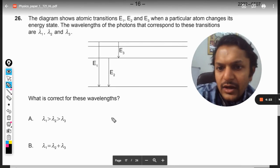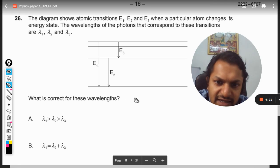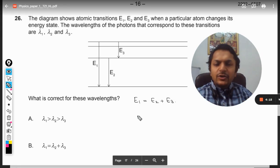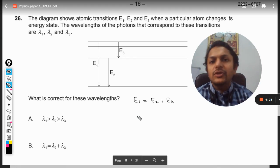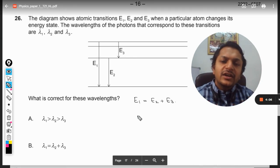Now we know that E1 will be equal to E2 plus E3. That we know from the electronic transitions, that if the transition is being made like this, the same amount of energy is released.